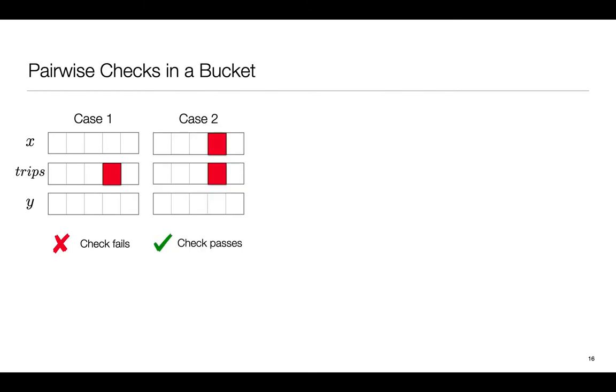In case 2, we have the top EDABIT being bad and the triple that is used for the check also being bad. For simplicity, I assume that the corruption pattern for the EDABIT and the triple is the same. So the error in the EDABIT is going to be cancelled out by the error in trips, resulting in the check passing.